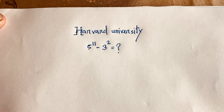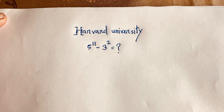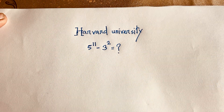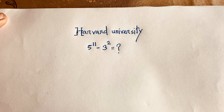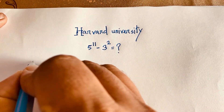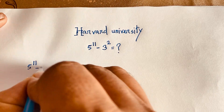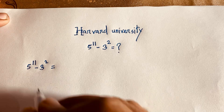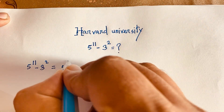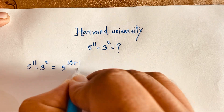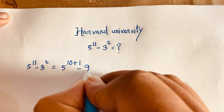Hello everyone. In this video we have solved this interesting math question: 5 to the power 11 minus 3 to the power 2 is equal to what? How to solve this math question without a calculator? So our question is 5 to the power 11 minus 3 to the power 2. Here 3 to the power 2 will be 9.